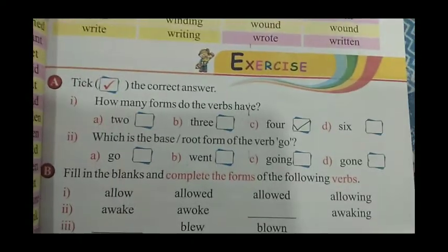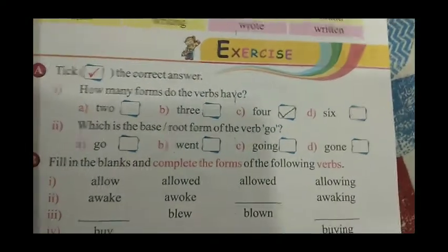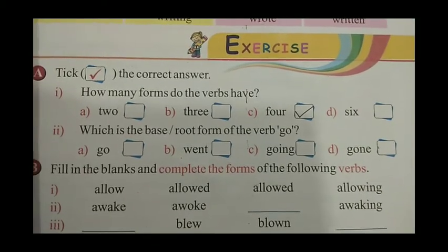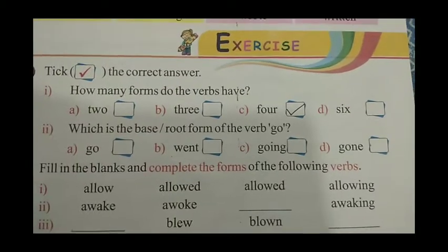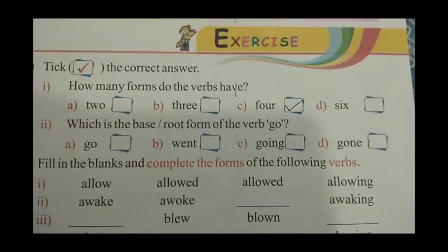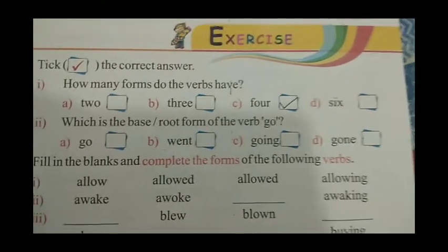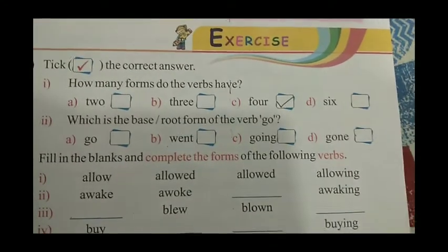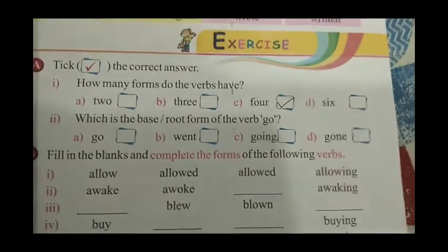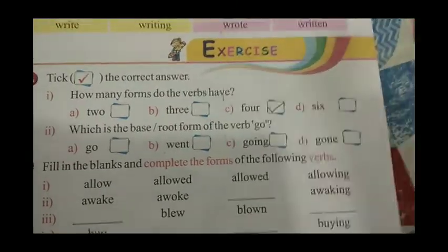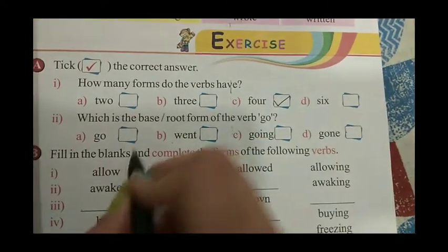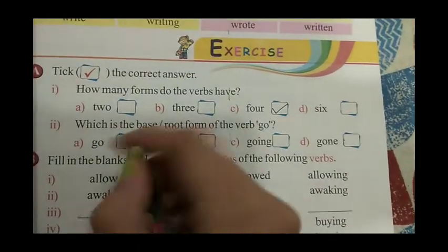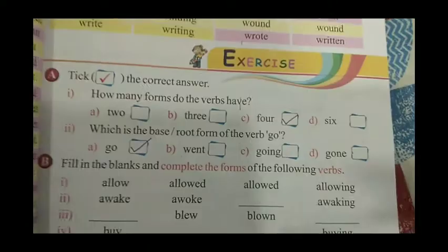Verbs have 4 forms, so you have to tick option number C — the verbs have 4 forms. Which is the base root form of the verb 'go'? The base of 'go' is 'go' itself. So we are going to tick option number A, because the base form of 'go' is 'go'. After that it becomes went, going, or gone.